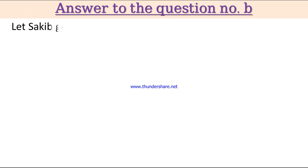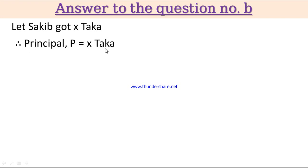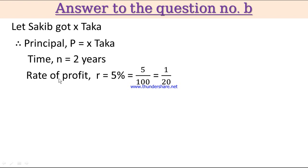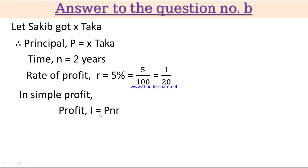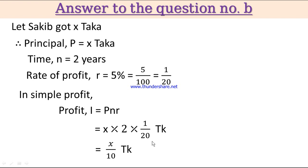Answer to Question B: Let Sakif received x taka, so principle P = x taka, time n = 2 years, rate of profit r = 5% = 1/20. In simple profit: I = P × n × r = x × 2 × (1/20) = x/10 taka.